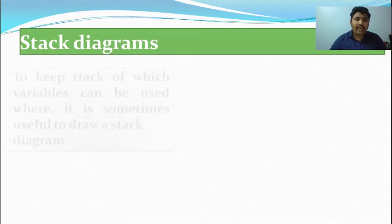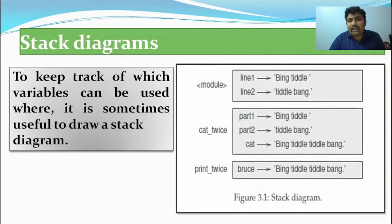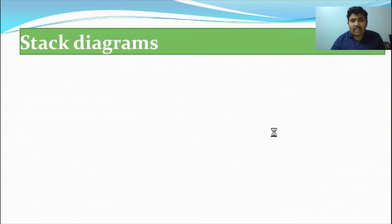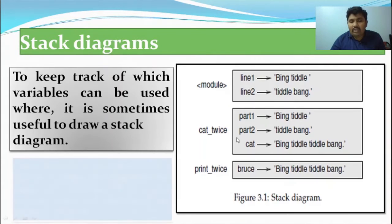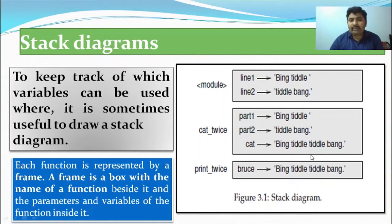The next topic is stack diagrams. To keep track of which variables are in which state and what values they hold, we use a diagram called a stack diagram. Each rectangle in the stack diagram represents a function and its own variables and the values those variables contain. For each and every function we draw a frame, and this diagram is called a stack diagram.